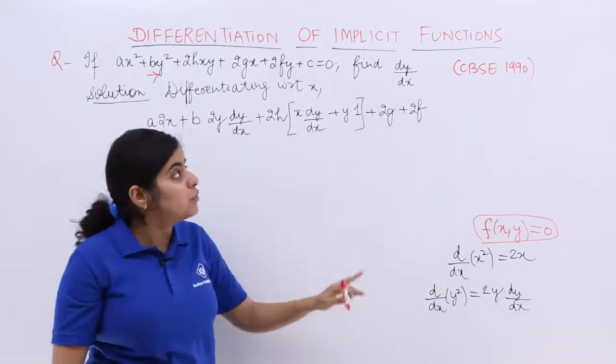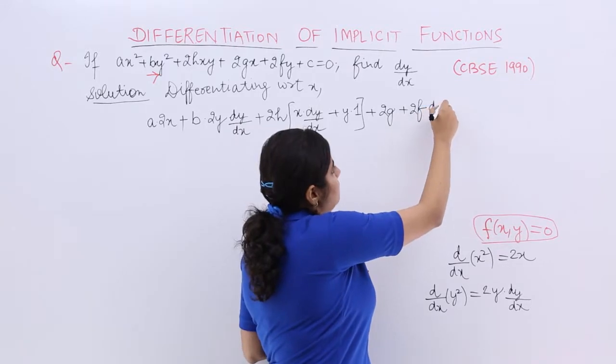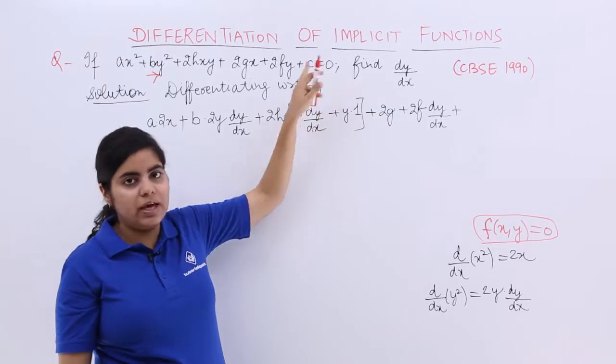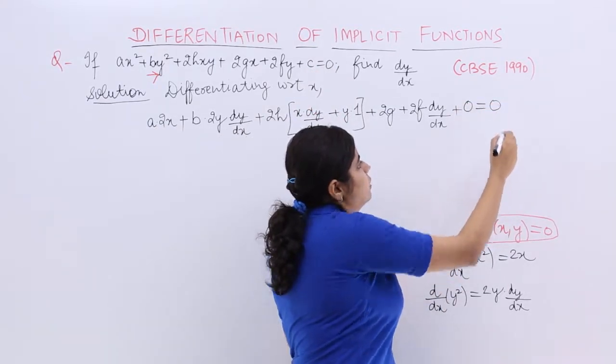Next is + 2fy. So, + 2f. Differentiation of y with respect to x is dy/dx. Next is + c. Now, + c wherein we know c is a constant. So its differentiation is 0 is equal to 0 only.